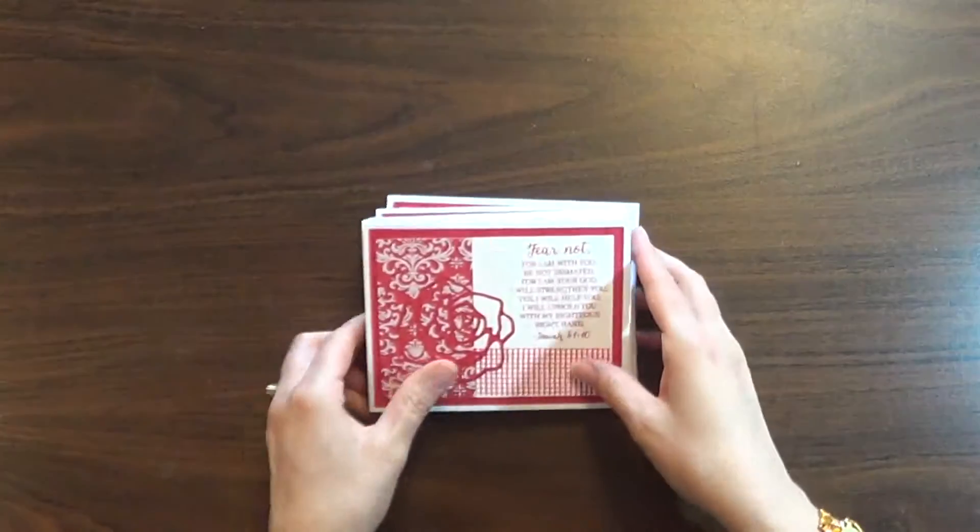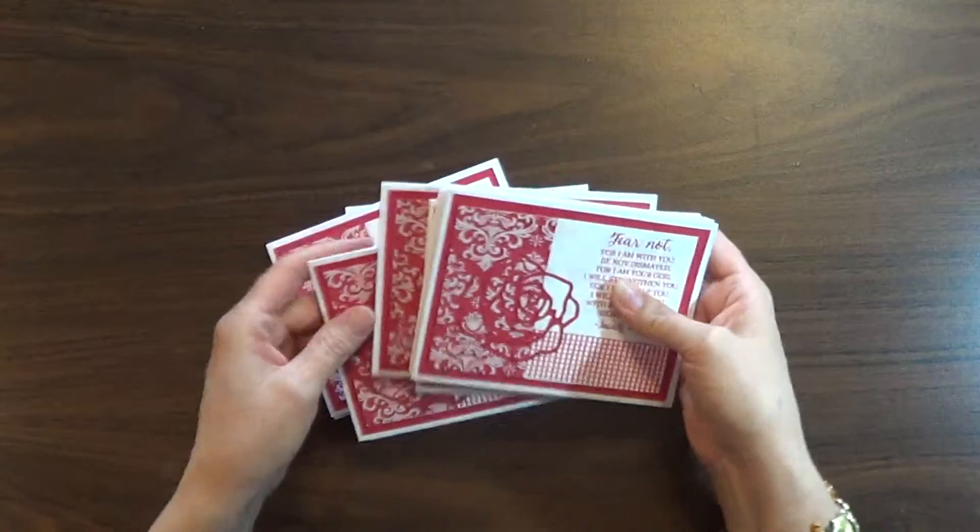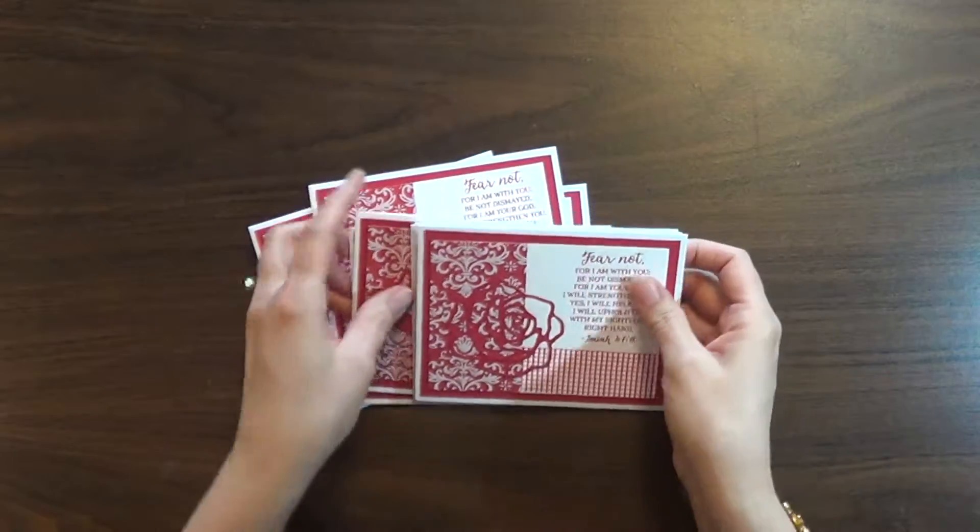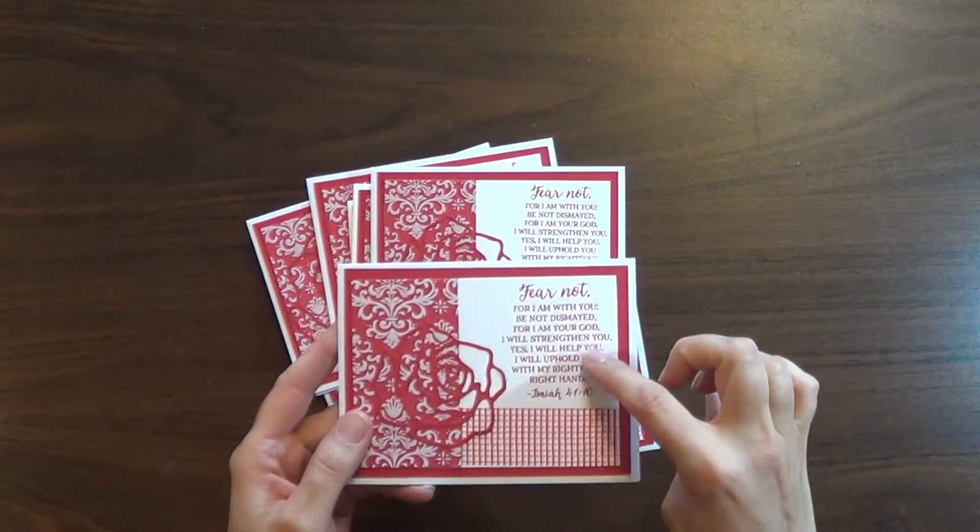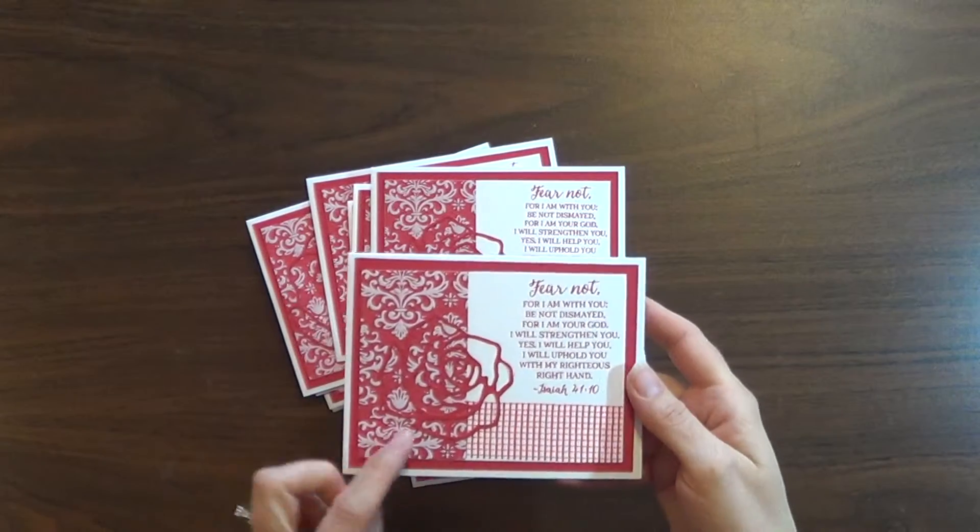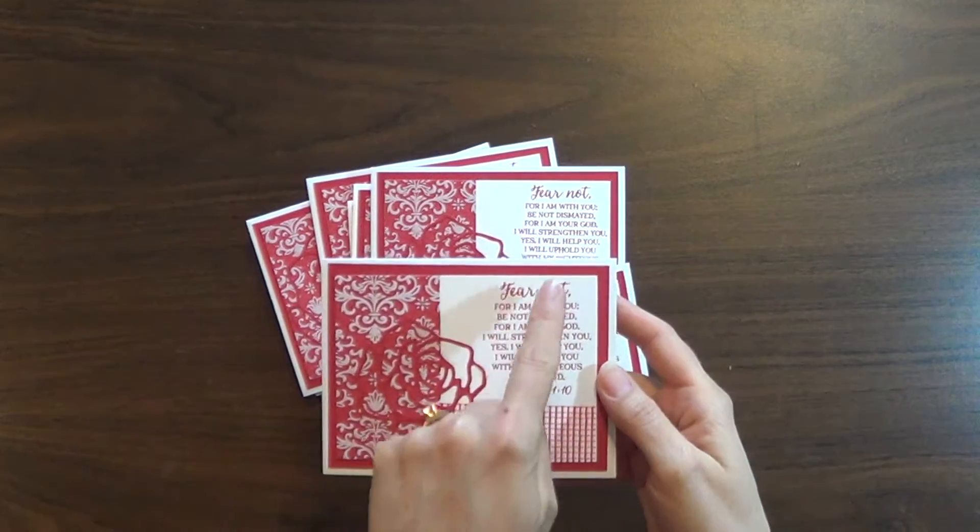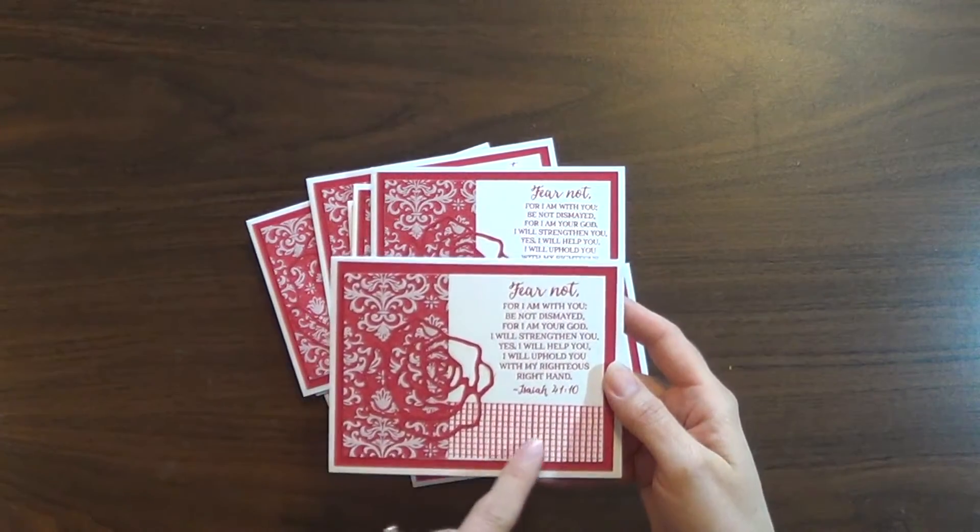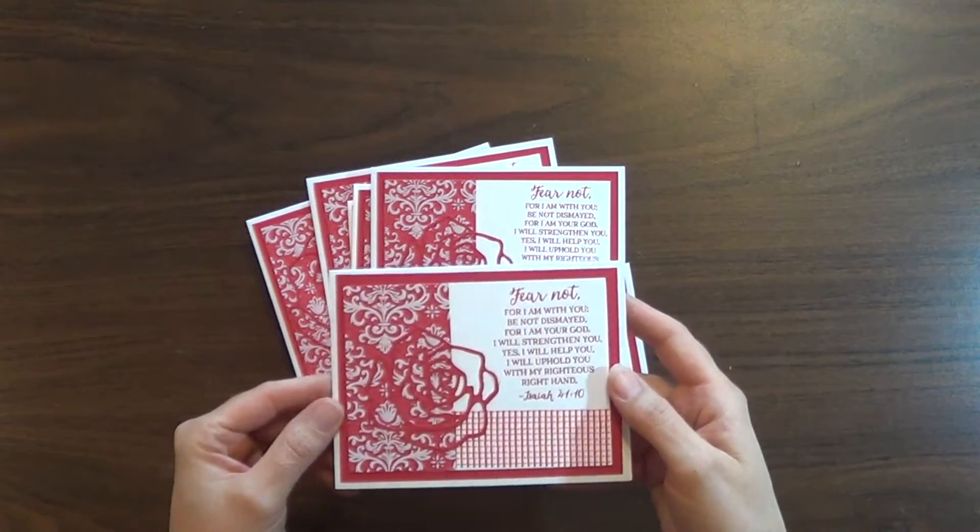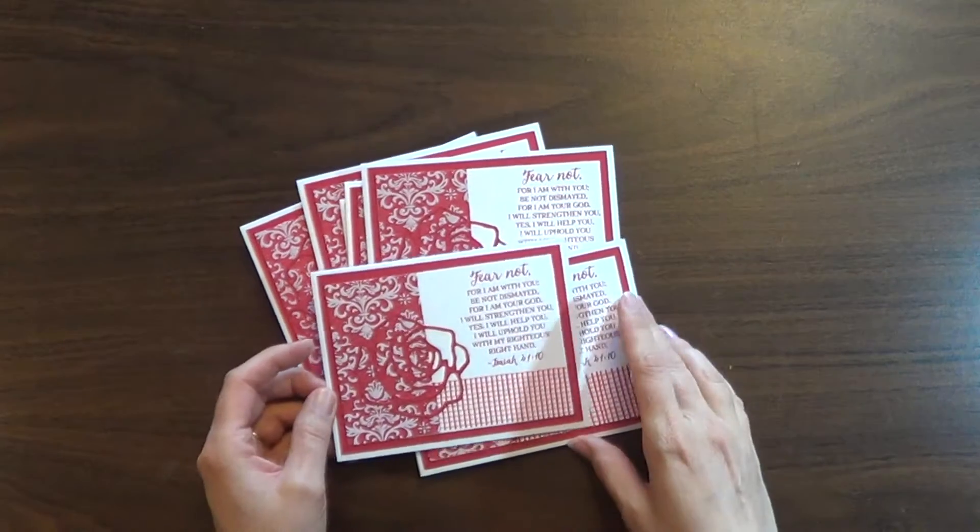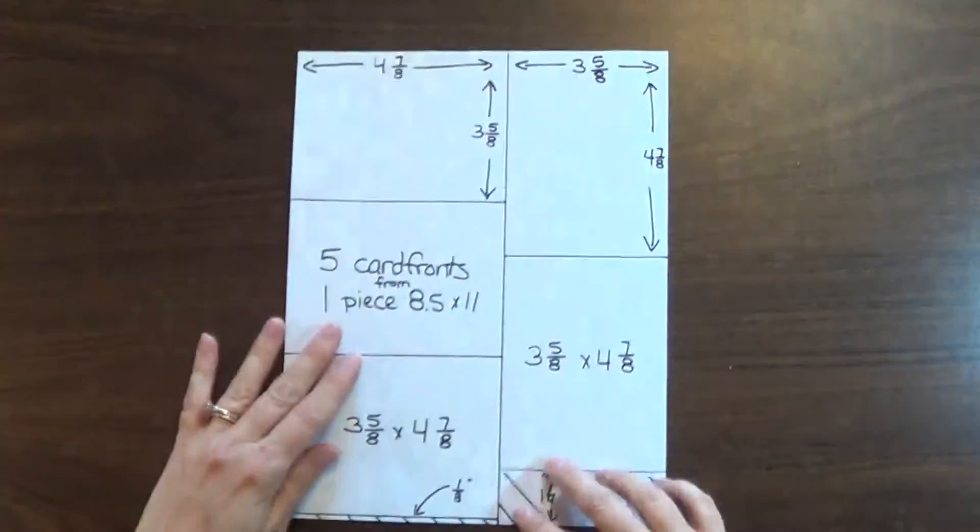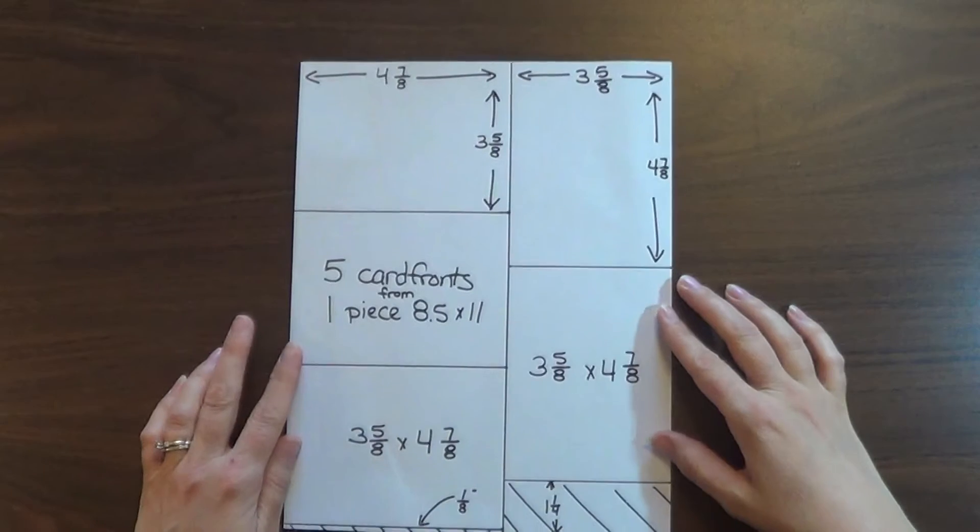I thought I would show you a card that I've done with this. I've done several copies of this card. And you'll see that the white section on the top, it is covered with some DSP and some other elements. But this is that four and seven-eighths by three and five-eighths piece of cardstock. So I was able to get five of these out of a piece of cardstock instead of four simply by cutting some of them at the opposite angle.